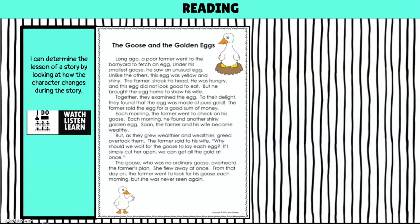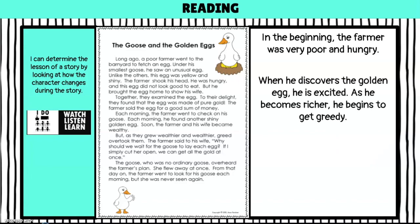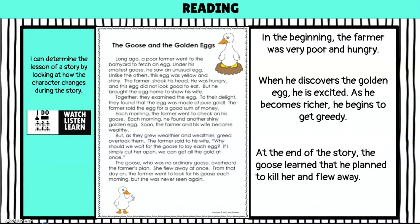So I have to think about my character. I know the character is the farmer because that's who the story is talking about most. The problem the farmer had will help me determine what lesson they learned from the story. In the beginning the farmer was very poor and hungry. When he discovers the golden egg, he's excited. As he becomes richer, he begins to get greedy. At the end of the story the goose learned that he planned to kill her and flew away.